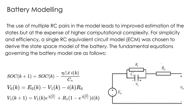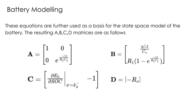In order to create an electrical equivalent of a battery, the Thevenin or equivalent circuit model is used. This consists of the resistance R0 to model the instantaneous response, as well as parallel RC pairs to depict the delayed response. The mathematical representation of the equivalent battery can be seen in these equations. These equations can be modified and the state space model consisting of the A, B, C, and D matrices can be calculated as shown.